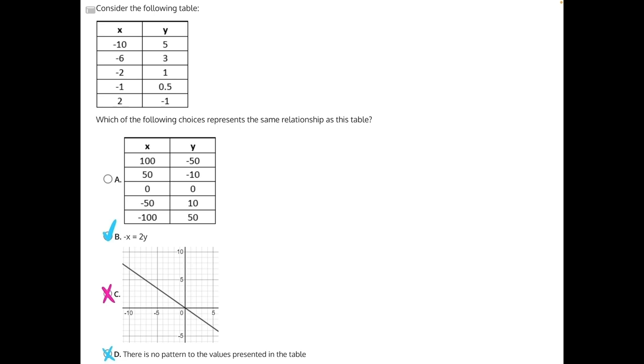For answer choice A, we would need to create an equation based on both tables to compare them. This takes the most time, which is why I advised starting with answer choices B and C rather than comparing two tables to each other. So let's start. We already know that this equation is y equals negative 1/2 x. Let's see what this table's equation would be. Let's take these two points because this will be very quick math. We'll have y2 minus y1 over x2 minus x1.